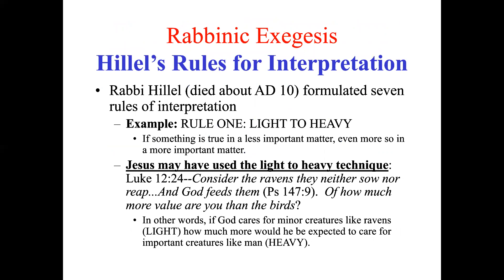How did the rabbis interpret the Bible? Rabbi Hillel formulated some rules of interpretation. These rules include going from light to heavy, an inference drawn from analogy, a general principle established on the basis of teaching contained in one verse, and so on. Hillel died around AD 10 — after the birth of Jesus but before his ministry — and he formulated seven rules of interpretation.